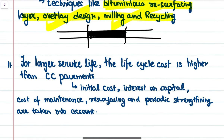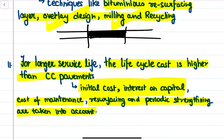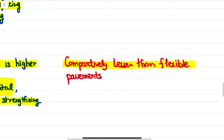The eleventh difference relates to life cycle cost. Since flexible pavement requires a lot of maintenance throughout its service life, this adds to the overall cost. The life cycle cost — including initial cost, interest on capital, cost of maintenance, resurfacing, and periodic strengthening — becomes higher than that of cement concrete pavement. Overall, the life cycle cost of rigid pavement is comparatively lower than that of flexible pavement.